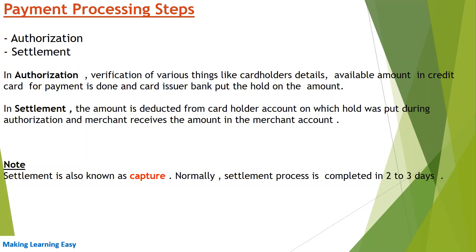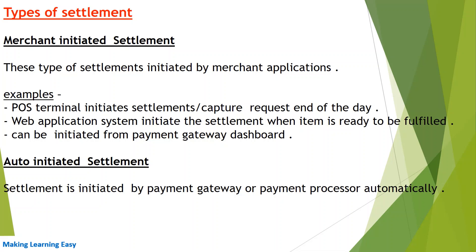When a customer places an order on the website and submits payment details, the authorization process is triggered at the backend. If authorization is successful, the website application allows the customer to place an order. If authorization is not successful, the website does not allow the order to be placed. At the time of order placement, the settlement does not happen. In the coming slides we will see when settlement happens and how it works. Now let's see the types of settlement.